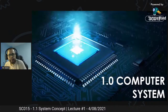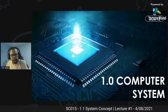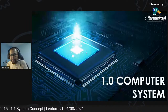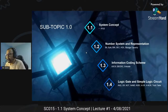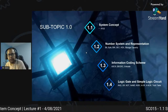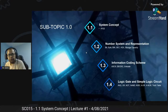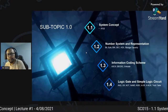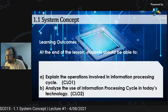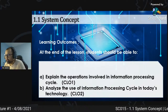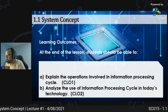Topik kita yang pertama iaitu Topik Satu: Computer System. Hari ni kita akan tengok topik yang pertama iaitu System Concept. Untuk topik yang pertama ni dia ada 4 subtopik: 1.1 System Concept, 1.2 Number System Representation, 1.3 Information Coding Scheme, dan 1.4 Logic Gate and Simple Logic Circuit. Ada dua learning outcome untuk 1.1: explain the operation involved in information processing cycle, dan analyze the use of information processing cycle into this technology.